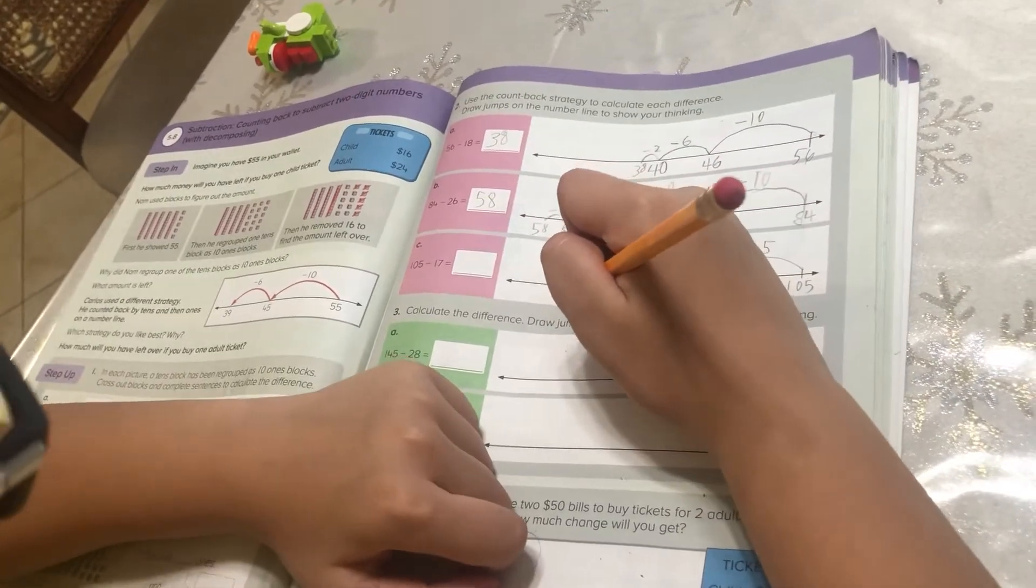Then if we subtract 2, which is 7, because 5 plus 2 is 7, it will lead us to 88.